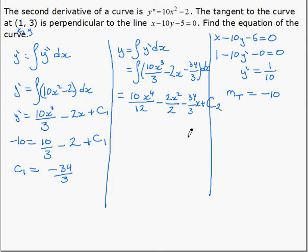And that second constant is what we need to find. Well, we know this is y equals, so now we know y, we know x, we can substitute to find c2. So, plugging in for y and x, we get 3 equals 5 over 6 times 1 to the 4, so we can leave that off, minus, the 2's here cancel, 1 squared is 1, so minus 1, minus 34 over 3 times 1, that's 34 over 3, plus a constant. Rearranging those pieces then,